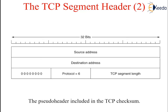The maximum segment size in the two directions need not be the same. The timestamp option carries a timestamp sent by the sender and echoed by the receiver. It is included in every packet since its use is established during the connection setup, and is used to compute round-trip time samples that are used to estimate when a packet has been lost. Finally, the SACK — selective acknowledgement — option lets a receiver tell the sender the ranges of sequence numbers that it has received. It supplements the acknowledgement number and is used after a packet has been lost but subsequent data has arrived, that is, duplicate data has arrived.